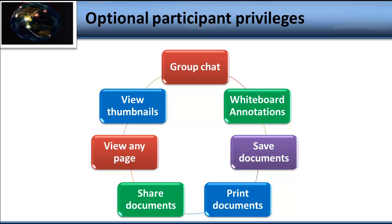As the host and presenter of the meeting you have all of this ability, but for people that are in your meeting as participants, you have to give them these privileges. As you look at these, which ones would you probably enable for a small group collaborative meeting? I would say for sure you should enable group chat and whiteboard annotations. You may also want to enable save documents and print documents, but for the others, be a little more cautious and remember to turn them off when you want to regain control of your meeting.